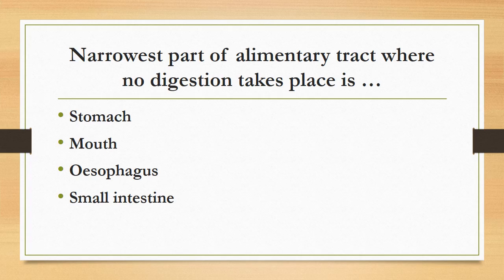The narrowest part of the alimentary tract where no digestion takes place is: stomach, mouth, esophagus, or small intestine. The correct answer is esophagus. The esophagus, also known as the food pipe, is a muscular tube connecting the pharynx with the stomach and is 25 cm long.